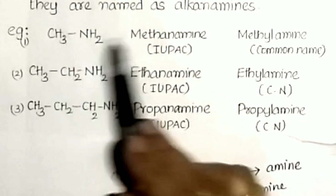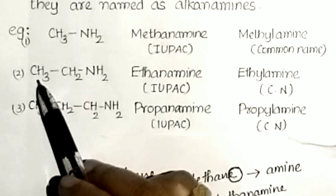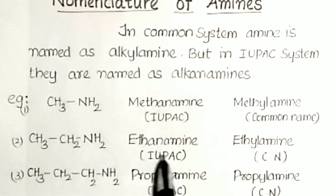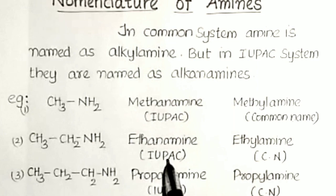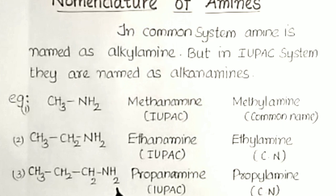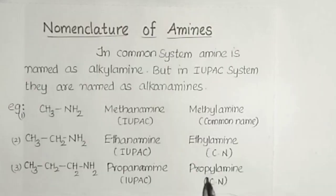For CH3CH2CH2NH2 with three carbon atoms, the IUPAC name is propanamine and the common name is propylamine.